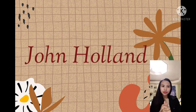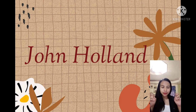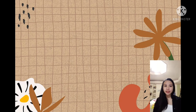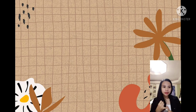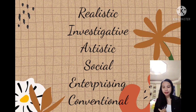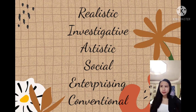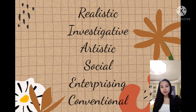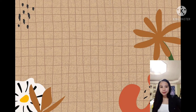Let's move on to the creator of Holland Occupational Themes, commonly known as Holland Codes. John Holland is an American psychologist who proposed six categories: realistic, investigative, artistic, social, enterprising, and conventional. These six categories each fit into different environments — realistic in a realistic environment, investigative in an investigative environment, and so on.